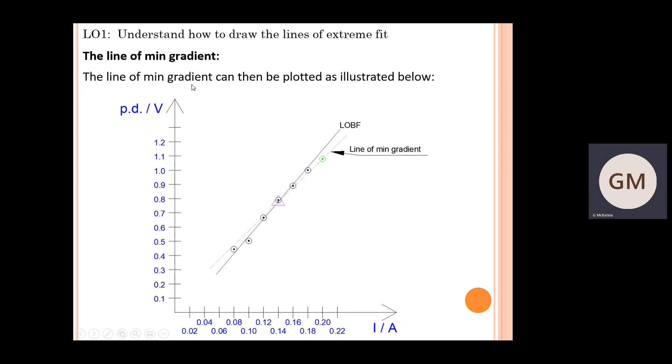Now we can plot that line of minimum gradient into your graph. Same process as before: it must go through that plotting point, it must also pass through the centroid, it needs to be a dashed line just to differentiate it from the line of best fit, and make sure you label that line of min gradient on your graph as well.